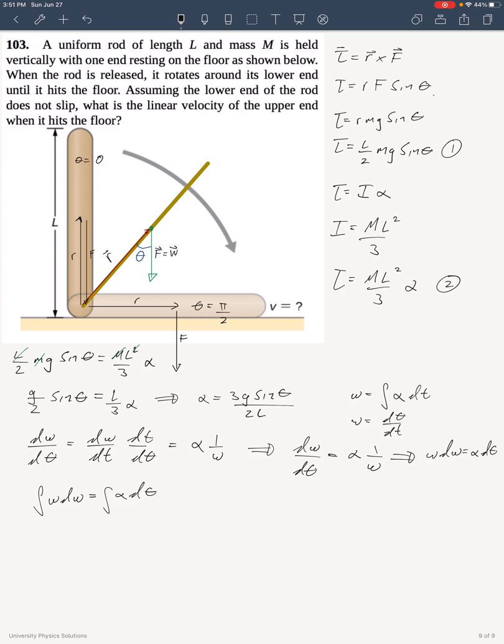Okay, so the integration of omega d omega, that's going to be equal to omega squared over 2. If I put some bounds, omega 0 to omega final, that will be omega squared over 2 evaluated between those two boundaries. So, let's do that.